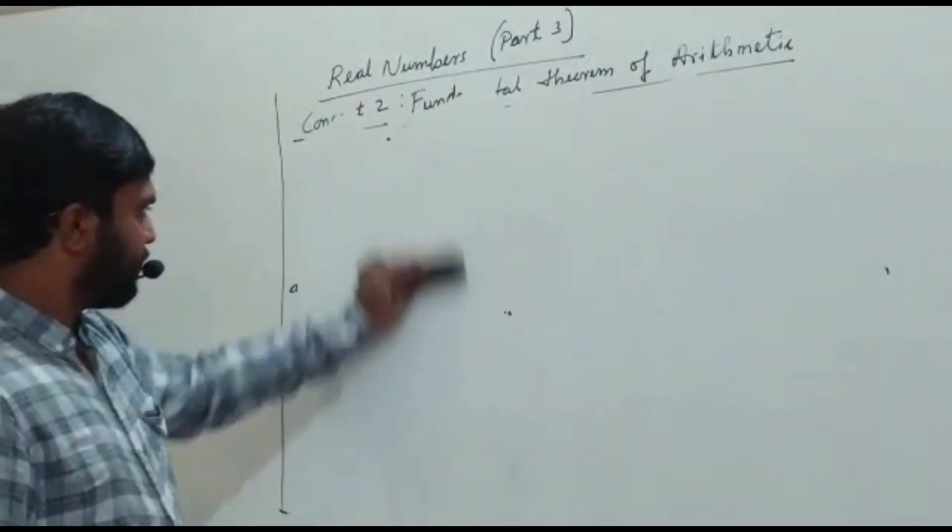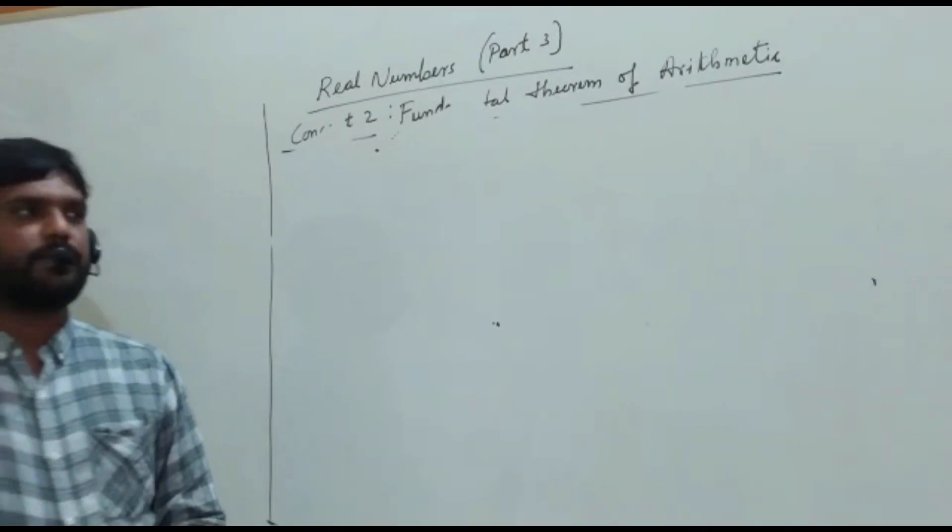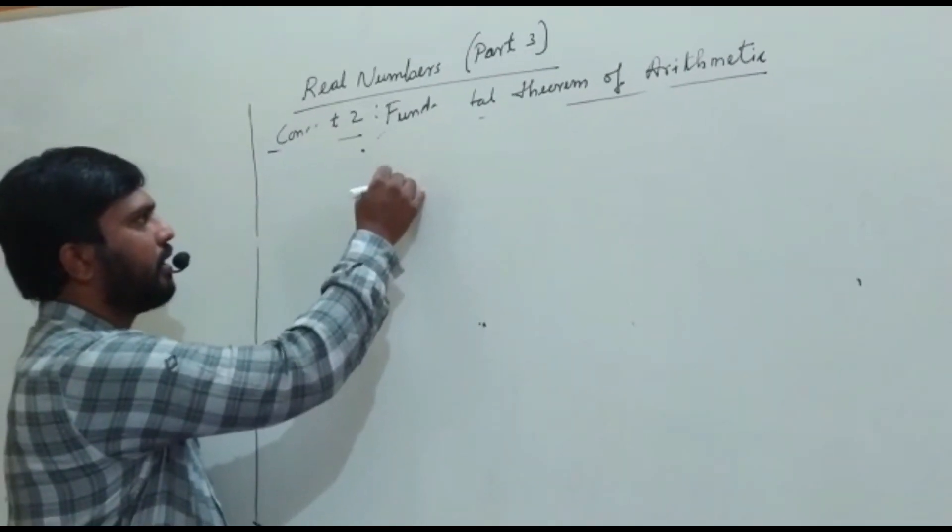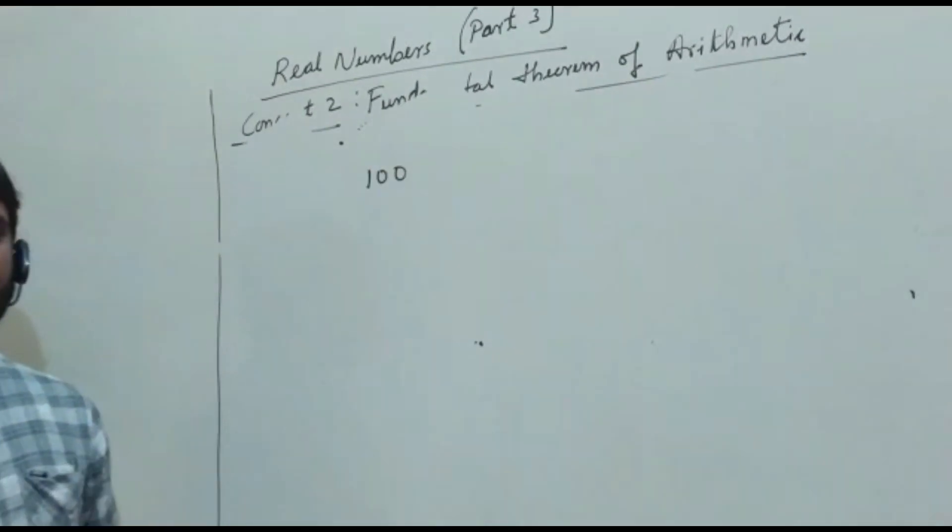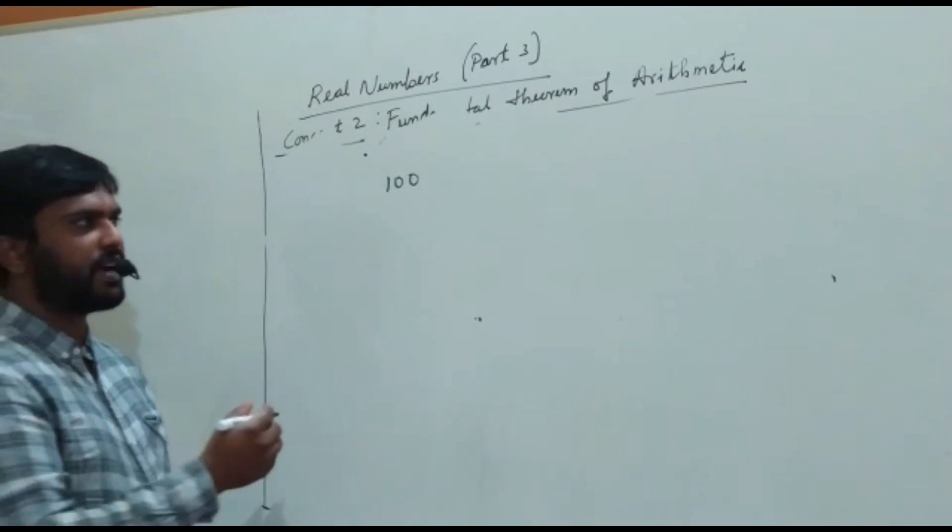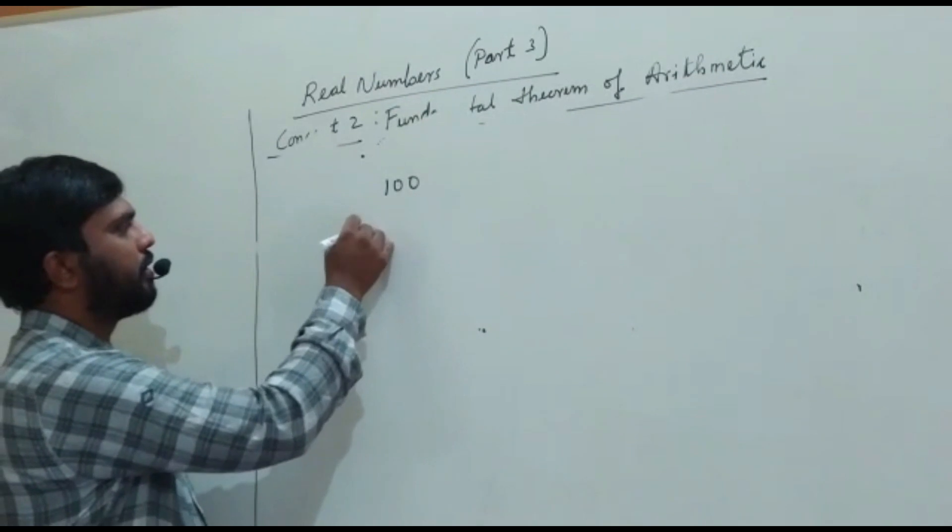The first problem. The first kind of question is very simple. Express any number you can take, 100 you take. Express 100 in the form of prime factorization. So 100.